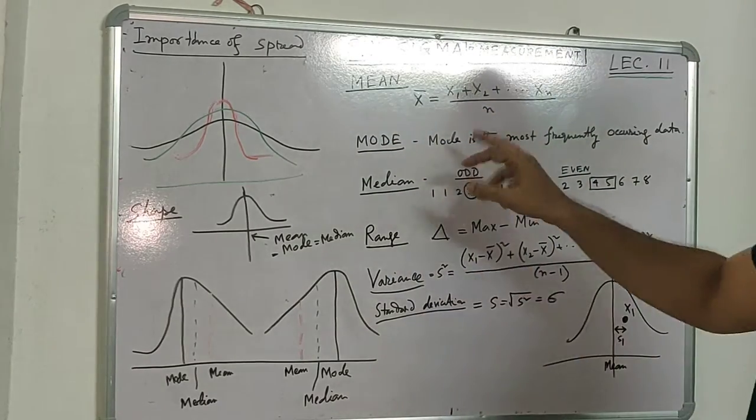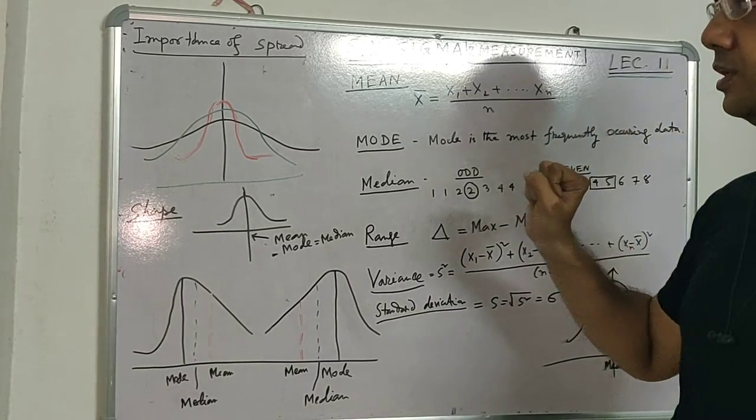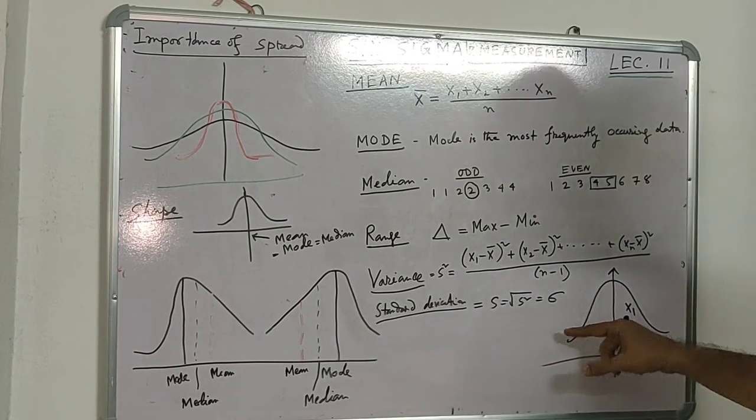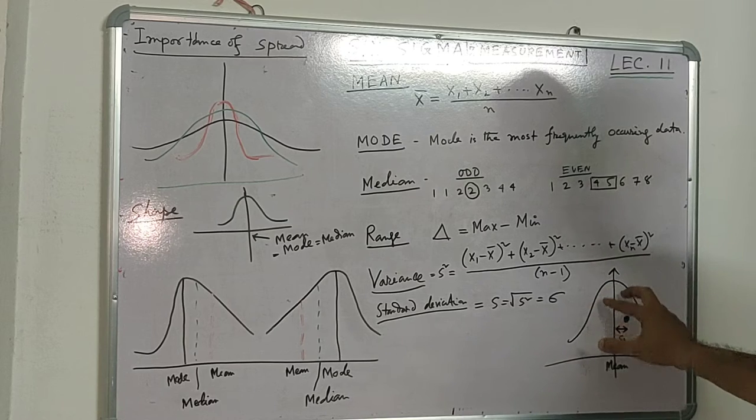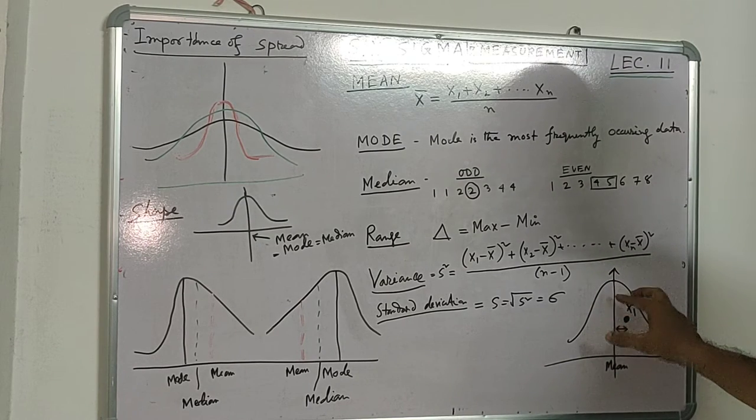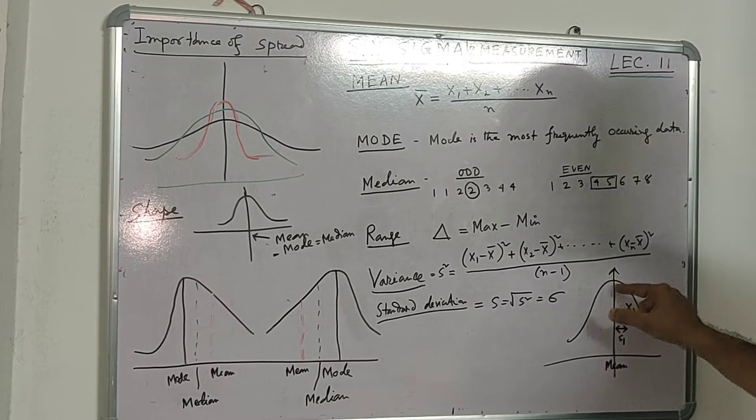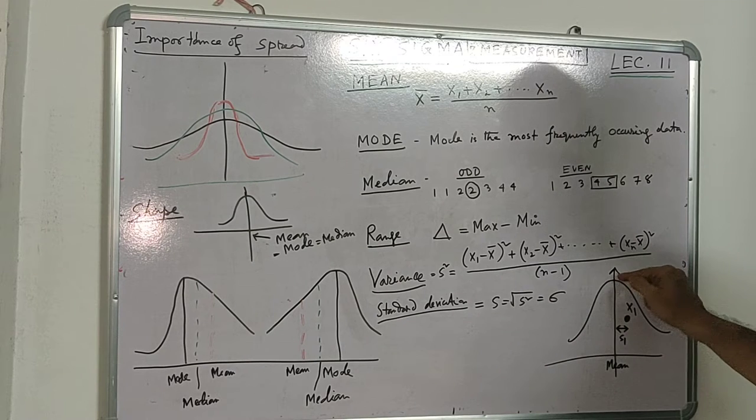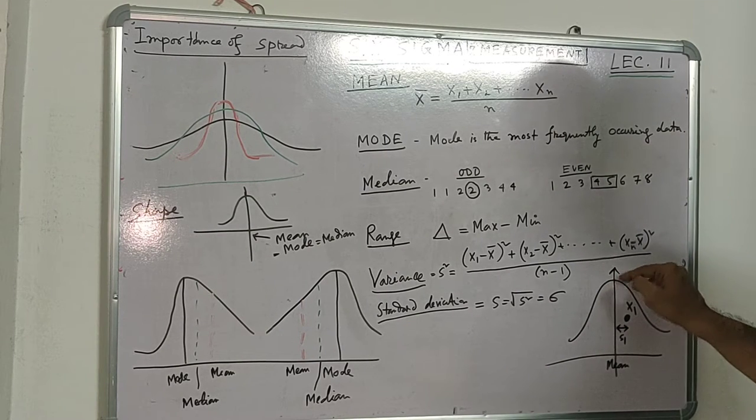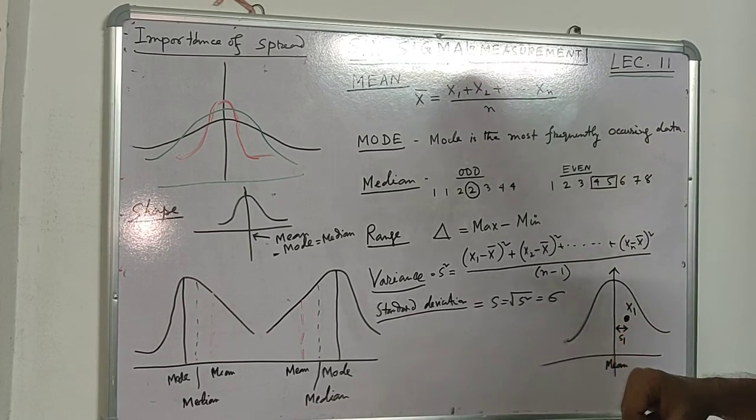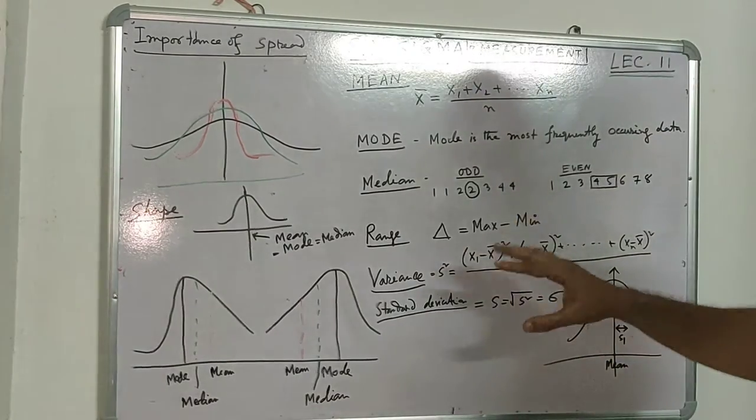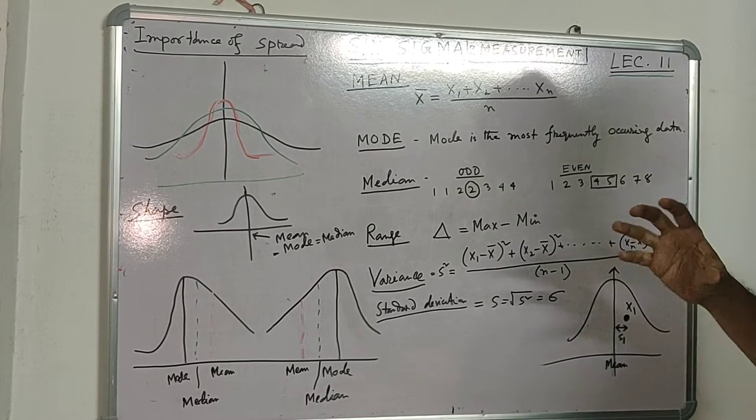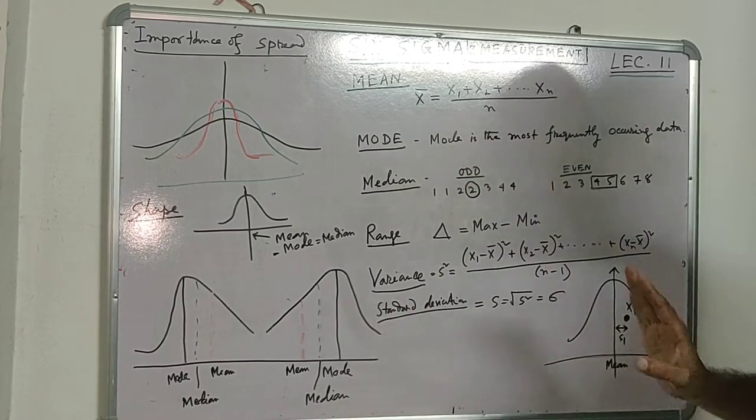What is mode? Mode is the most frequently occurring data. Suppose in any system we are collecting data that is normally distributed—along the target line there will be maximum data points. Here will be the maximum number of data points clustered, so this is the mode point.